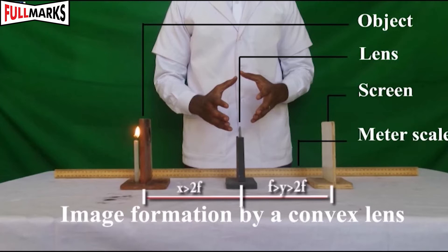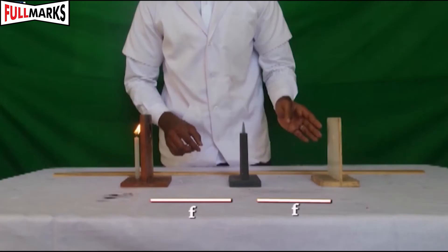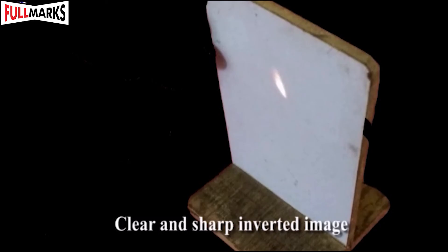Mark the position of the lens on the table and fix the lens at this position. Label it as O. Mark a point F on both sides of the lens as the focus by using the focal length calculated in the first step.